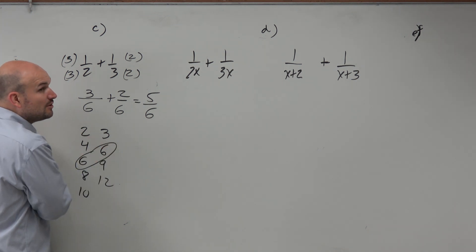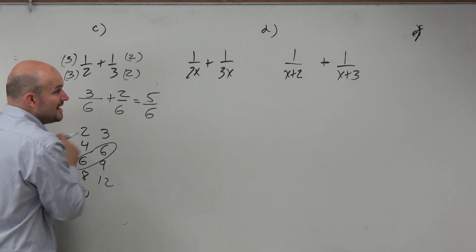That doesn't always give you the smallest term. But wouldn't you guys agree that 2x times 3x, if you multiply them, that's going to give you a 6x squared. But do we really need an x squared there? Could we just do 6x? Right, yeah.